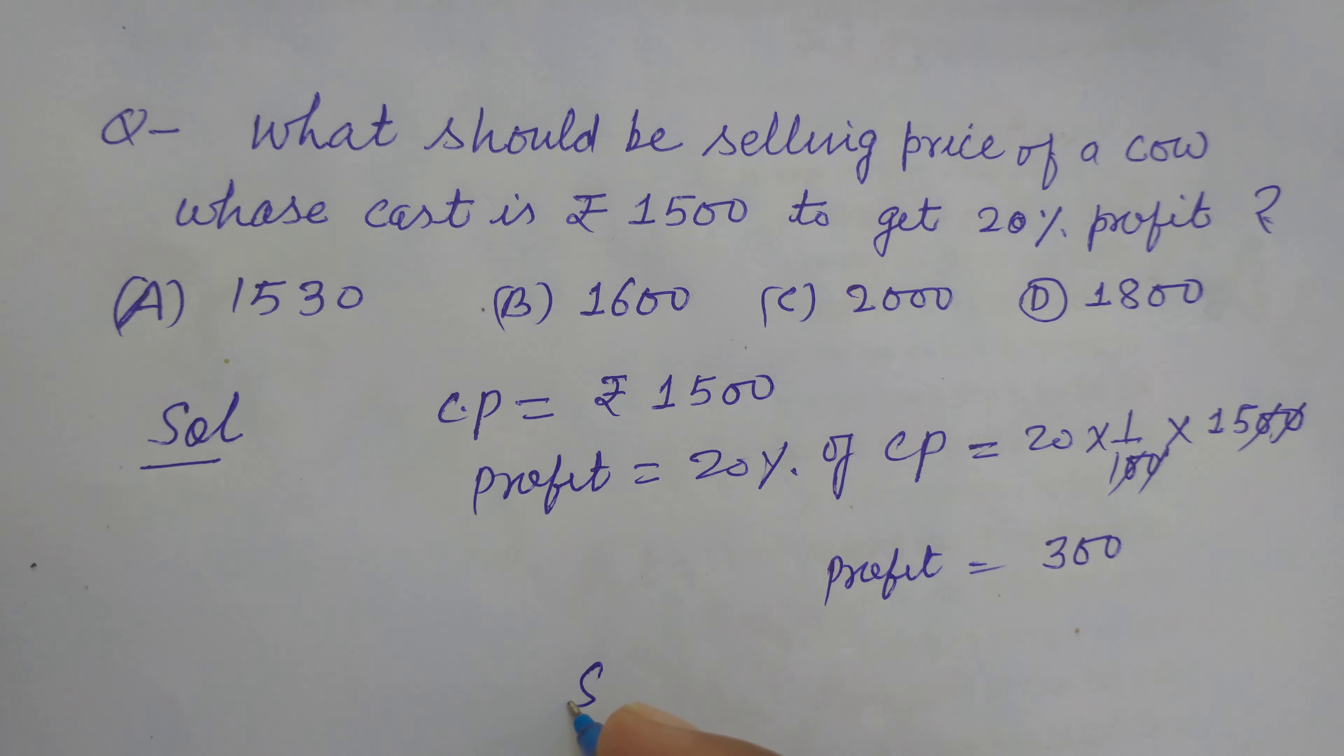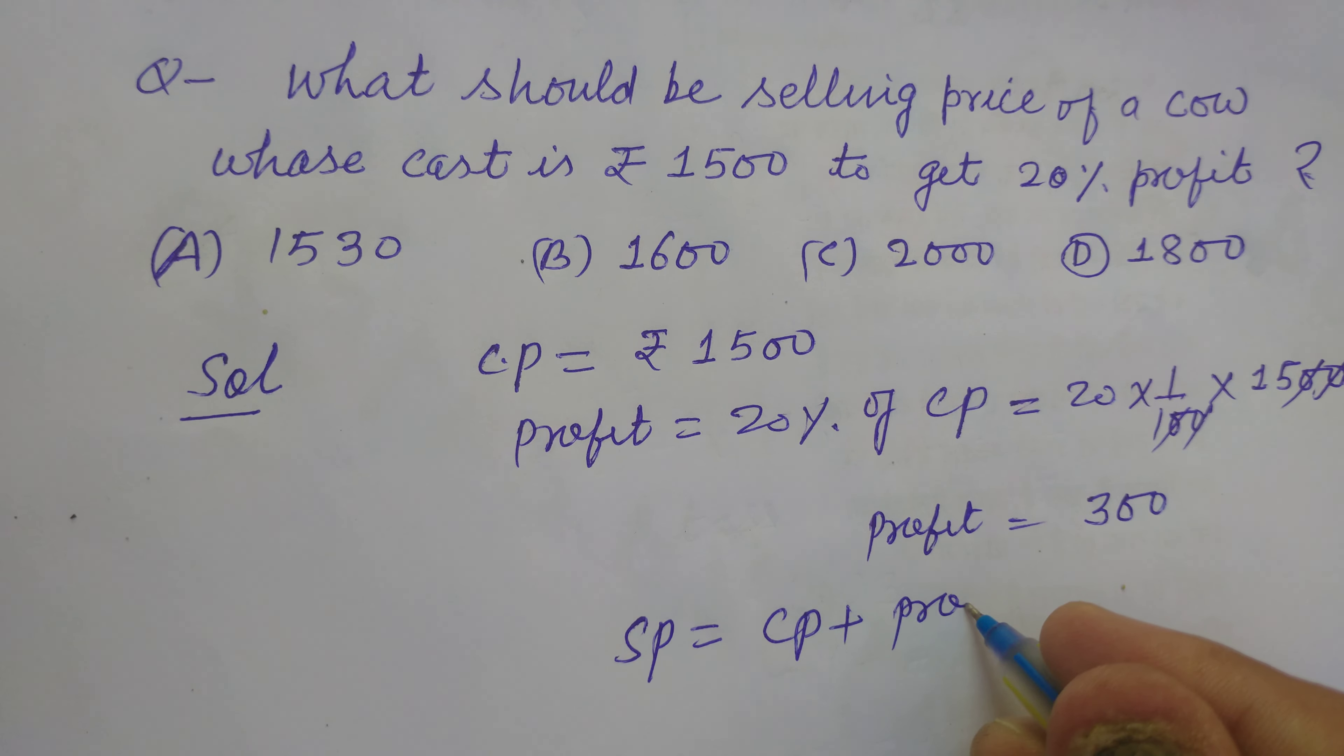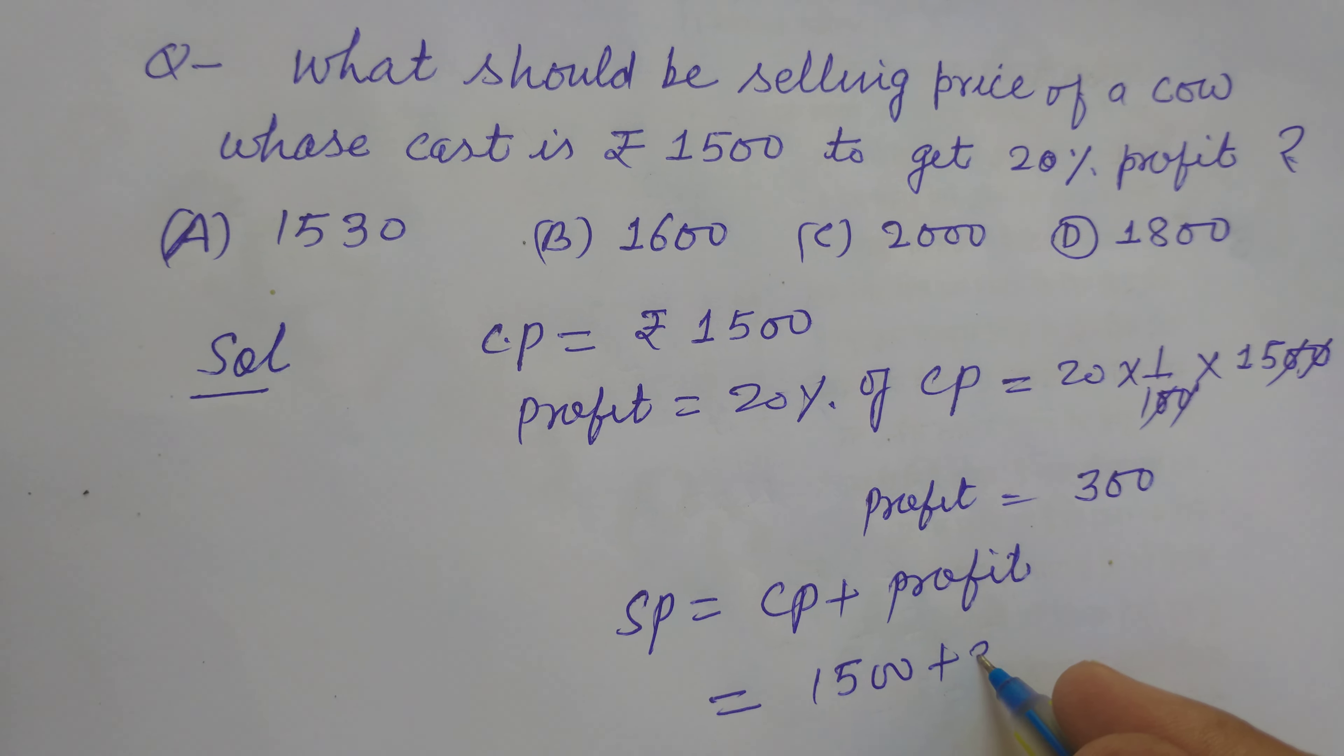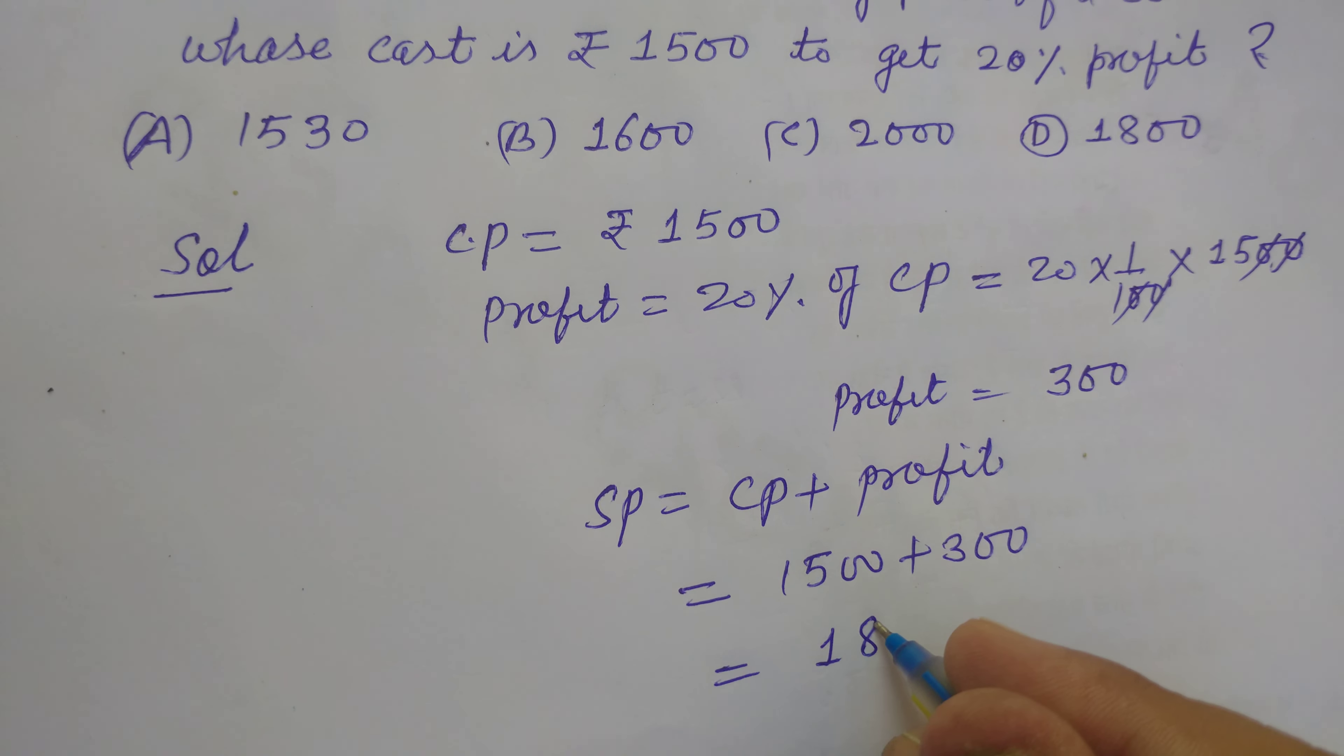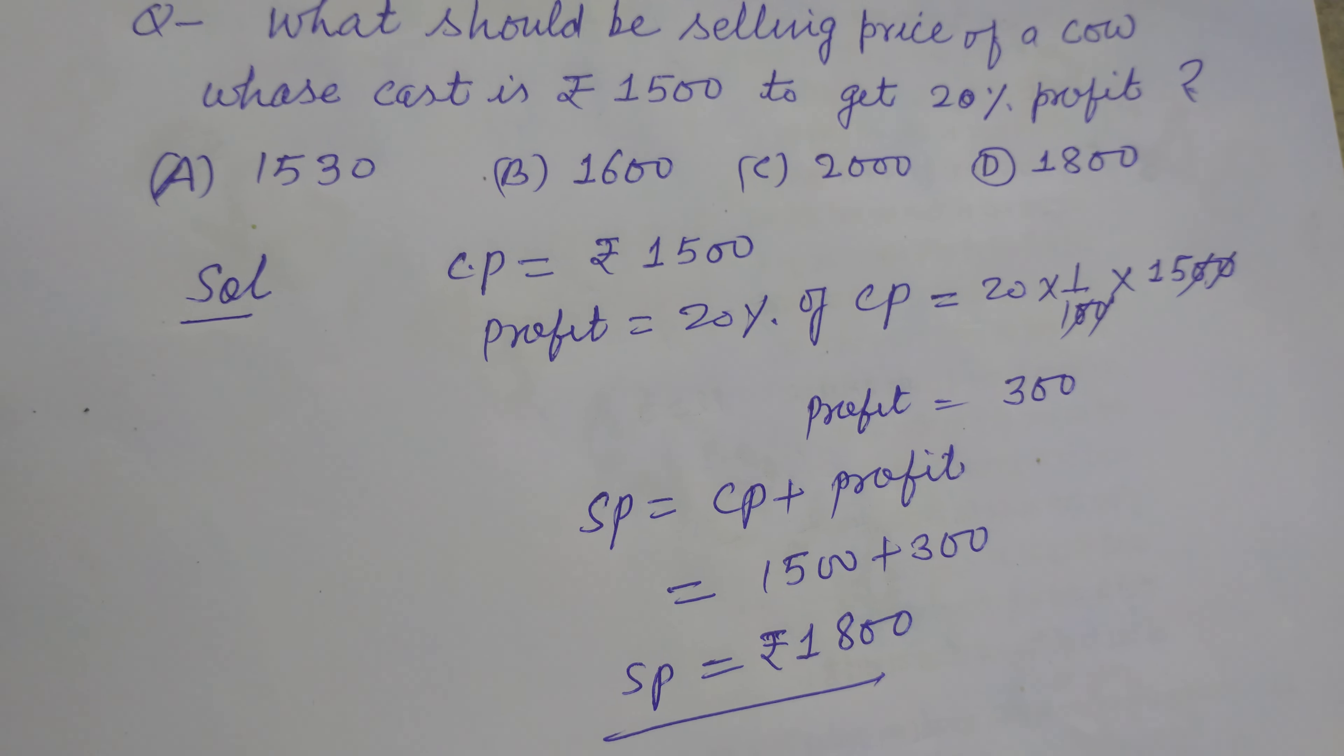Therefore, selling price equals cost price plus profit. So CP is 1500 plus 300. So we got 1800. So 1800 rupees is the selling price of the cow.